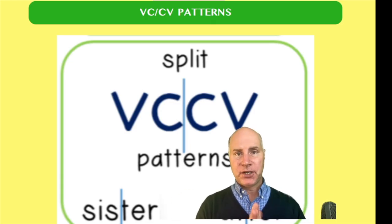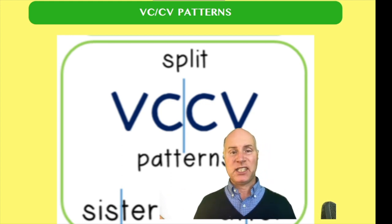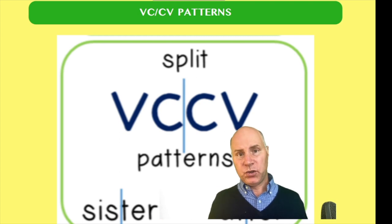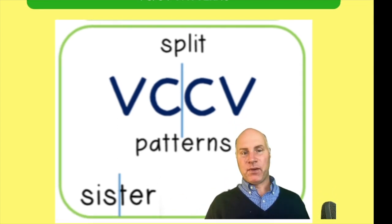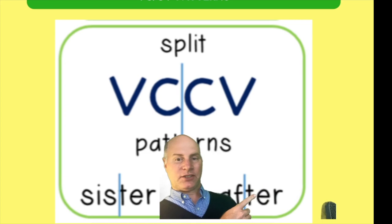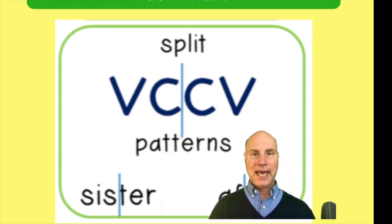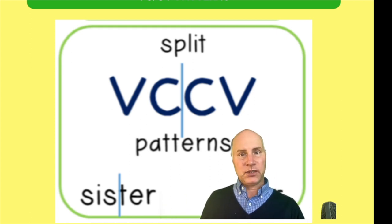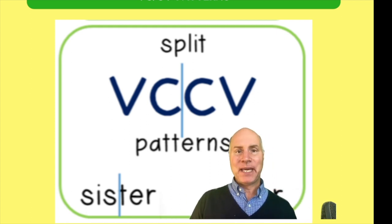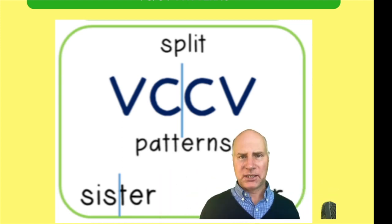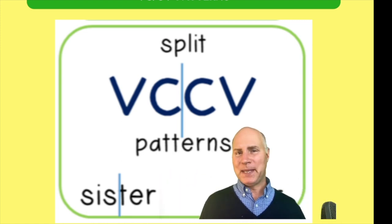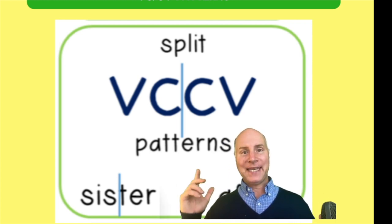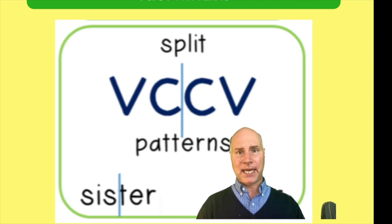A student's use of syllabication can happen with very basic words. Look at these two-syllable, high-frequency words — 'sister' and 'after.' A student could be using syllabication for these words or not. It doesn't have to be a long, complex multi-syllable word; it could be a very basic two-syllable word that the student struggles with.